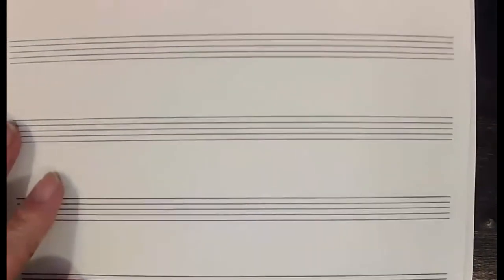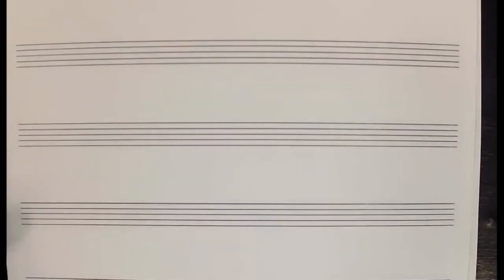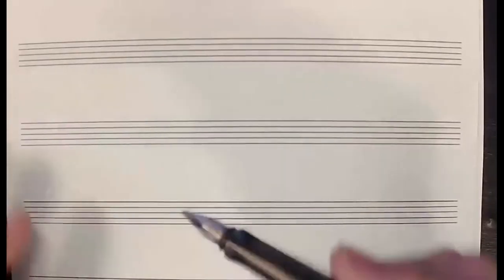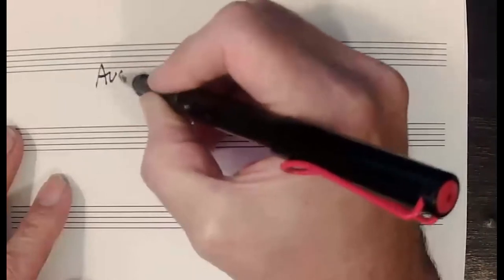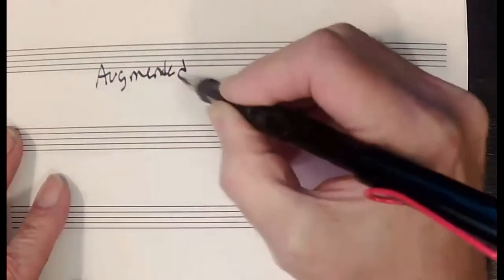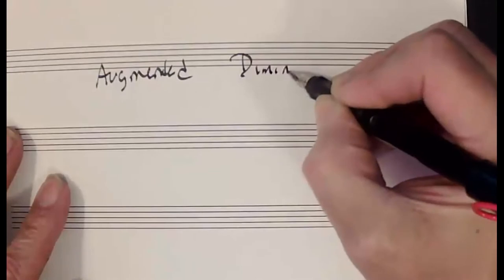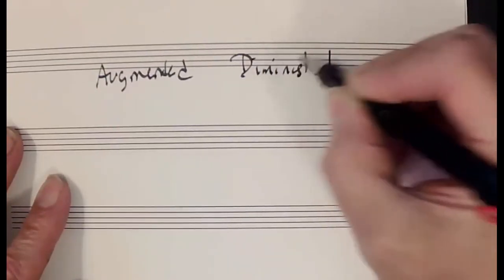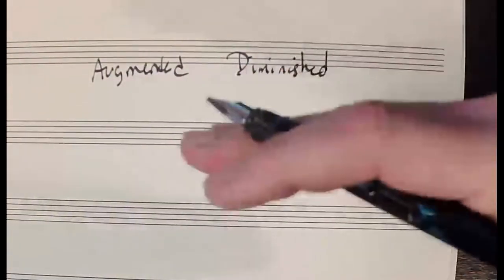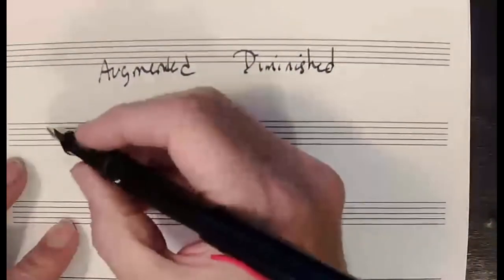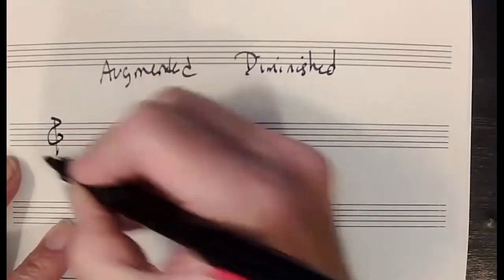We're going to continue our discussion of augmented and diminished intervals, but now we're going to start with intervals that are major in quality rather than perfect in quality, and this will result in some different rules for some of these terms. We still have augmented and diminished intervals, where augmented means to expand the interval by a half step and diminished means to contract, but now we're going to start with major intervals as starting points.